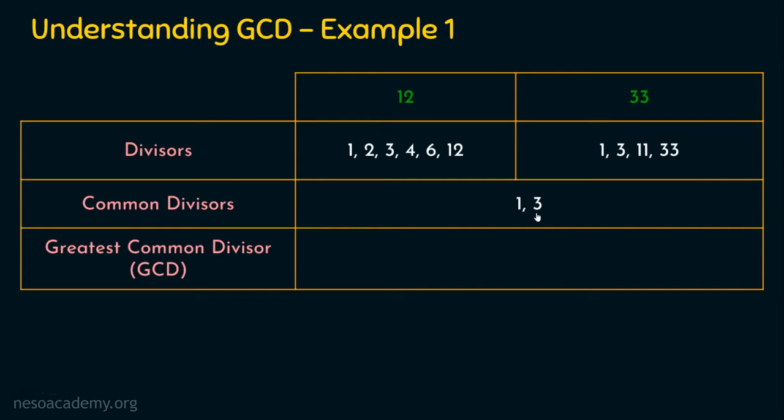Now we are going to focus on the greatest common divisor. There are 2 common divisors: 1 and 3. Which is the greatest? It's 3. So the greatest common divisor is 3. The GCD of 12 and 33 is 3. So 3 is the greatest common divisor, or HCF — the highest common factor — of 12 and 33. We are done with example number 1.